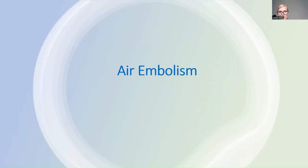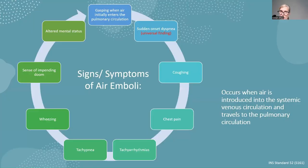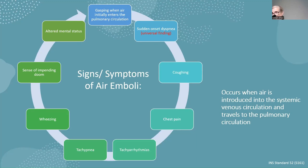Air embolism occurs when air is introduced into the systemic venous circulation and travels to the pulmonary circulation. The patient may gasp when air enters the pulmonary circulation. The universal finding is sudden onset of dyspnea — if a patient suddenly has shortness of breath and has a catheter, you should think about this. Other signs include coughing, chest pain, tachyarrhythmias, tachypnea, wheezing, a sense of impending doom, or altered mental status.